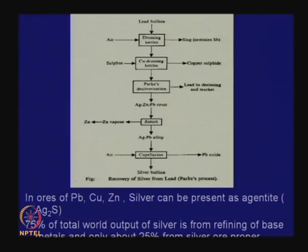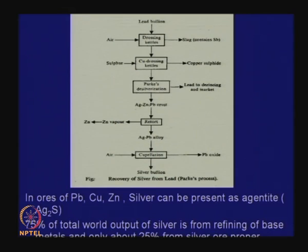I have talked about extraction of gold and we saw that a good deal of gold present in elemental form as small particles embedded in rock surfaces can be extracted by the cyanidation process. Gold can also come from other sources like during the extraction of base metals. During electro refining of copper, for example, it will be found in anode slimes.